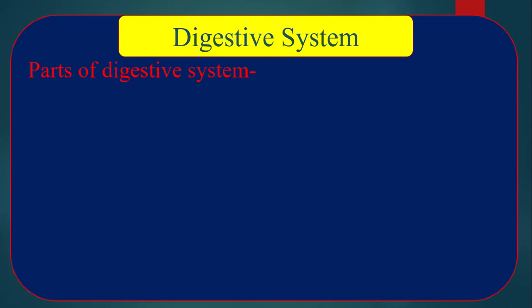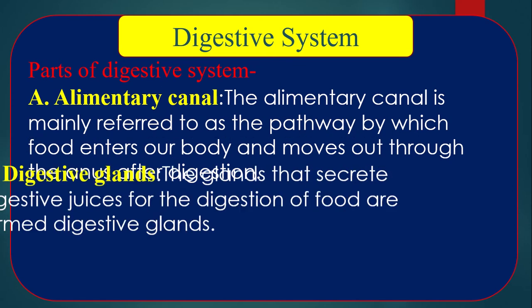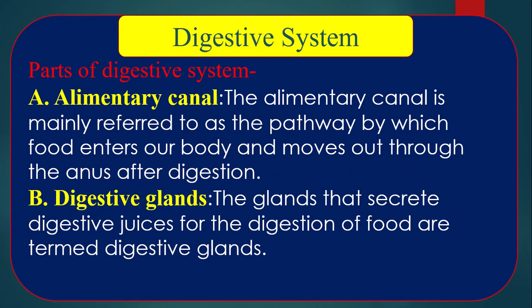We may divide the digestive system into mainly two parts: number one, the alimentary canal, and number two, digestive glands. The alimentary canal refers to the pathway by which food enters our body and moves out through the anus after digestion — that means the total tube-like pathway from mouth to anus. Digestive glands are the glands that secrete digestive juice, open into the alimentary canal, and help digest food.